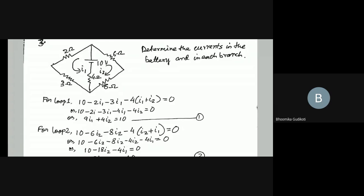After 10 volt comes 2 ohm, so minus 2 I1, then minus 3 I1, then minus 4 — that is the branch current at 4 ohm. So 4 multiplied by I1 plus I2, because both currents are going upwards in that branch. The arrow is upward in the 4 ohm branch for both I1 and I2. Had it been in the opposite direction, it would have been I1 minus I2 equals to 0.